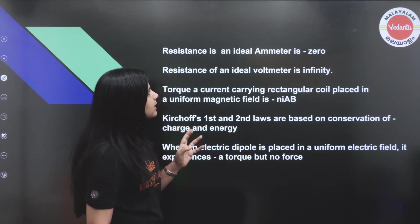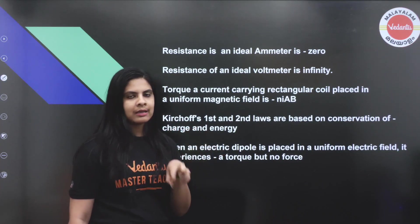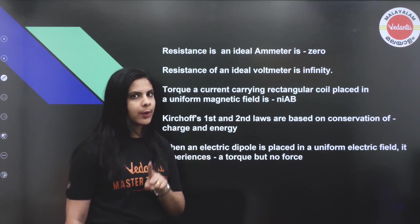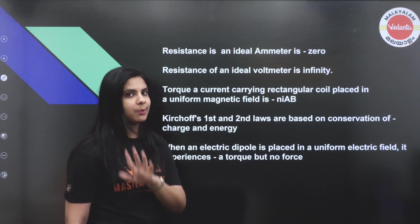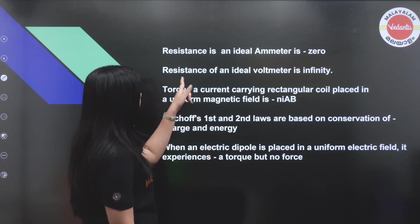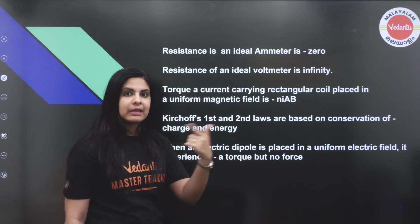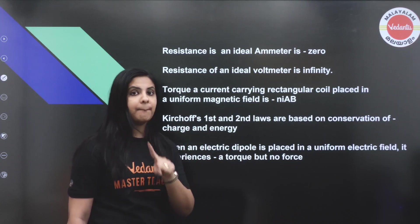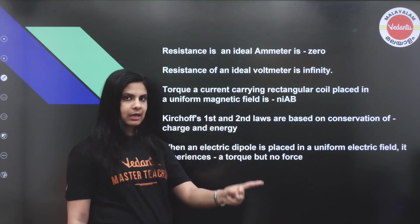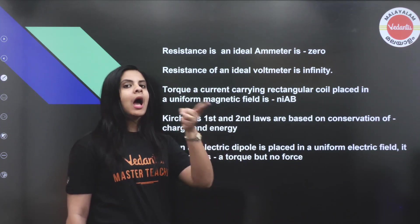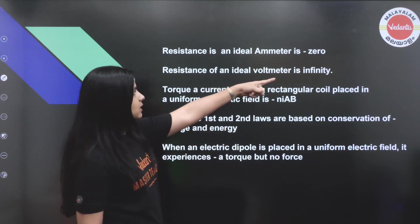The resistance of an ideal ammeter is zero. The resistance of an ideal voltmeter is infinity. These are key facts: ideal ammeter = zero resistance, ideal voltmeter = infinite resistance.